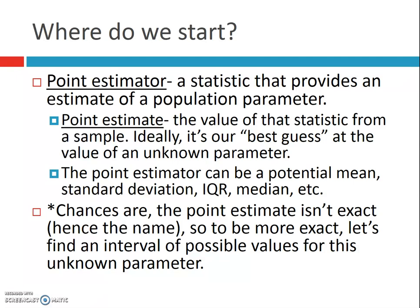So where's a good place to start? A point estimator — that's a statistic that provides an estimate of a population parameter. The point estimate is the value of that statistic from a sample. Ideally, it's our best guess at the value of an unknown parameter. The point estimator can be a mean, standard deviation, IQR, median — whatever you want to know about. Chances are the point estimate isn't exact, so in order to be more exact, we find an interval of possible values for the unknown parameter.